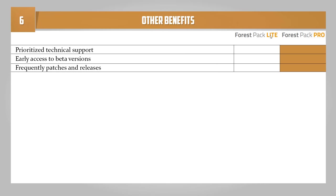Шестой пункт — отличия Lite-версии от Pro, включающие три особенности. Первое: приоритетная техническая поддержка. Второе: ранний доступ к бета-версиям, которые включают много новых и интересных функций. Третье: более частые релизы и патчи. На этом краткий обзор особенностей завершён. Думаю, вы сделали свой вывод и согласитесь, что лучше всего купить Pro-версию и получить все плюшки. В следующей части урока я рассмотрю подробнее все перечисленные особенности.